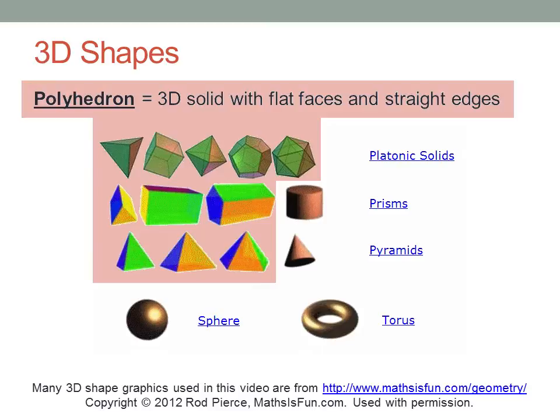Most of these shapes shown here are polyhedral. A polyhedron is a three-dimensional solid made up entirely of flat faces joined along straight edges. The cylinder, cone, sphere and torus all have at least one curved face, but each of the other shapes here is a polyhedron.